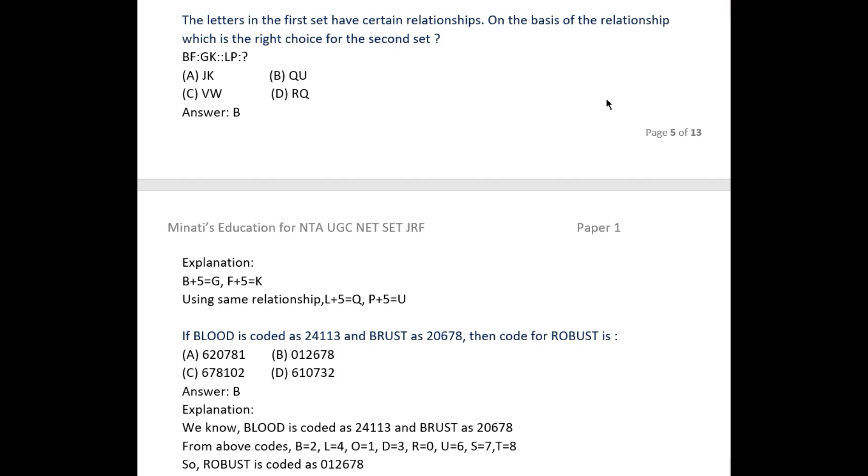This sum is important for the NTA UGC NET exam paper one, coming under the reasoning part. The letters in the first set have certain relationships. On the basis of the relationship, which is the right choice for the second set? BF is to GK, as LP is to question mark.